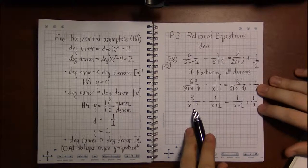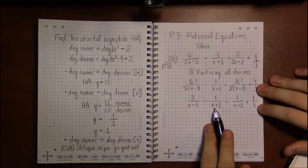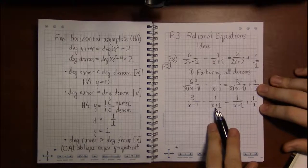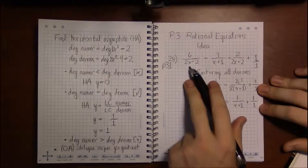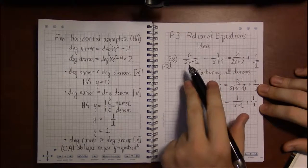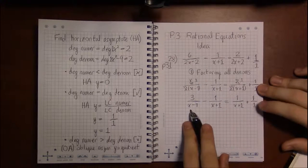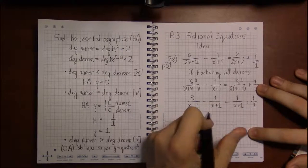I can actually do a little canceling here. 2 goes into 6 three times and into 2 once. So I'm left with 3 over x minus 1 minus 1 over x plus 1 equals 1 over x plus 1 plus 1 over 1. Now the nice part about doing that is we have some repetition, whereas if we left it as this, our least common denominator could get rather large if we weren't smart about things.